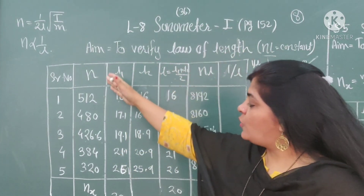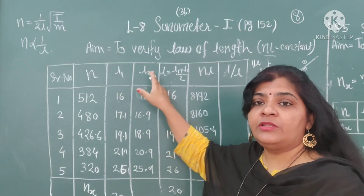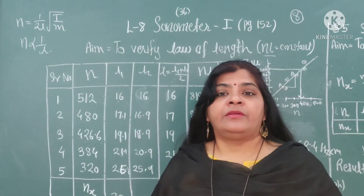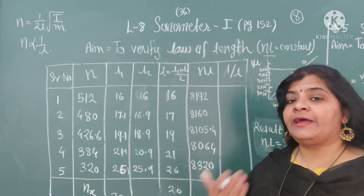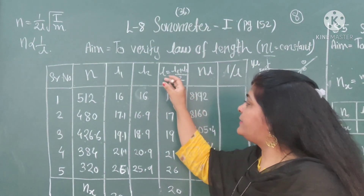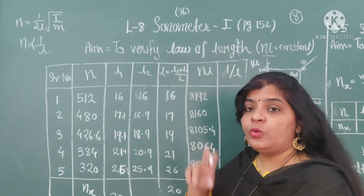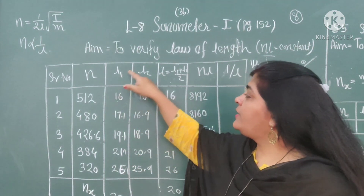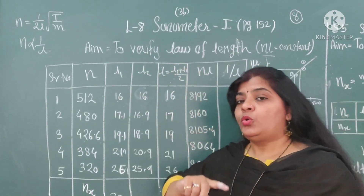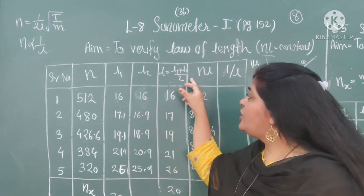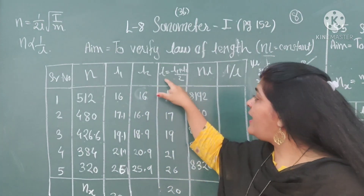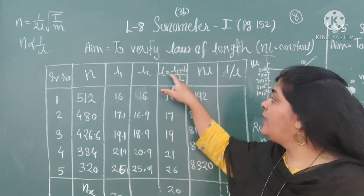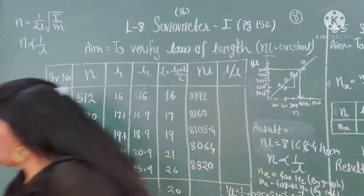The frequency is already written in. Next is to find out L — how to find out L. You have both sides, so you have to find out L on both sides. That is why two readings will come: one is L1 and the second is L2. Take the mean of those readings — the formula is L equals L1 plus L2 upon 2.